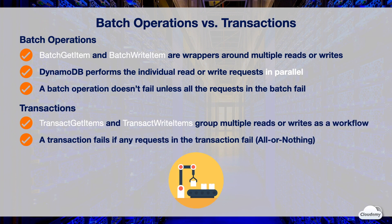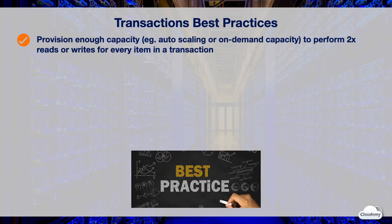DynamoDB transactions allow you to group multiple read or write operations as a workflow using TransactGetItems or TransactWriteItems. Operations in a transaction are interdependent — no partial transaction is allowed. A transaction fails if any individual request fails, and DynamoDB processes the transaction as an all-or-nothing operation so that all requests succeed or none of them succeed.